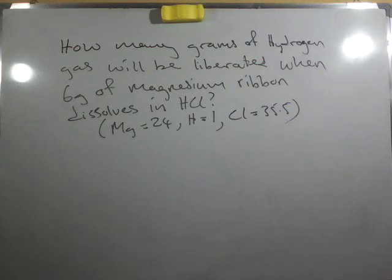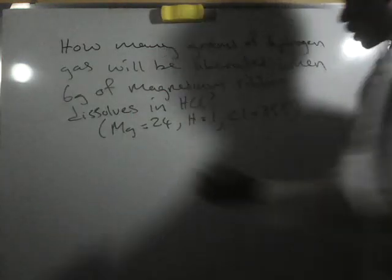Hello everyone, the question we have here is: how many grams of hydrogen gas will be liberated when 6 grams of magnesium ribbon dissolves in hydrochloric acid? The relative mass of magnesium is 24, hydrogen is 1, and chlorine is 35.5. To calculate this, the first thing we do is get a balanced chemical equation.